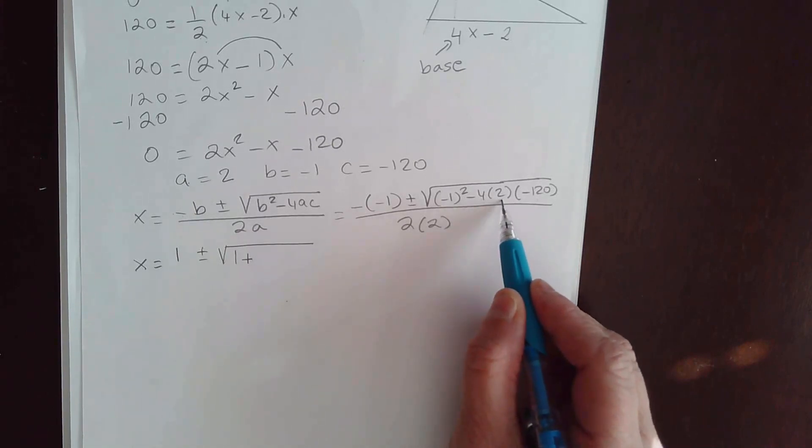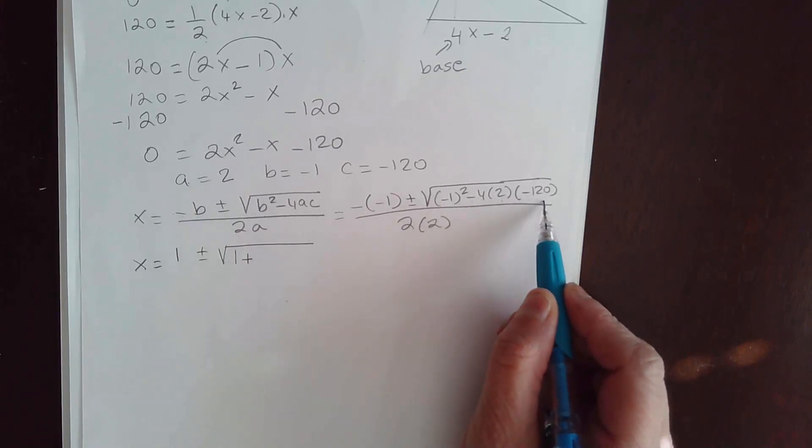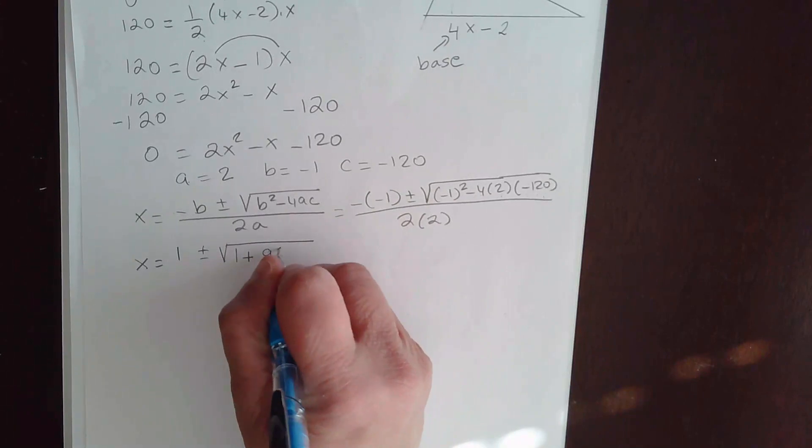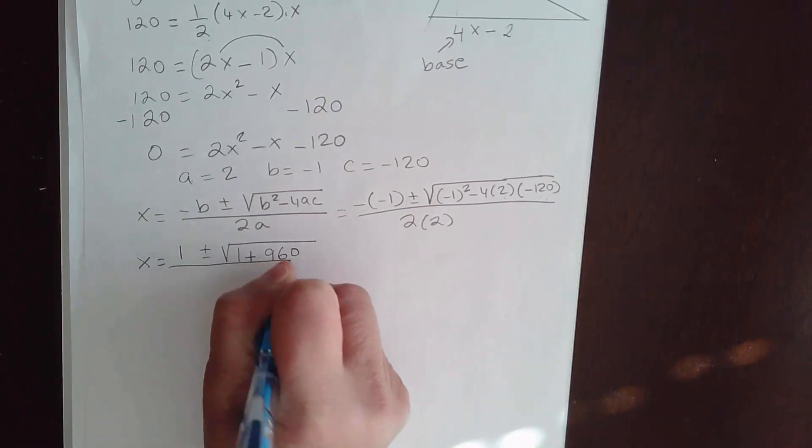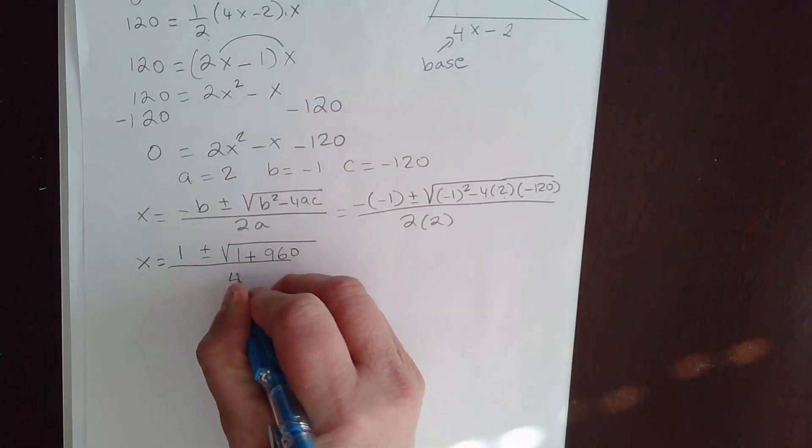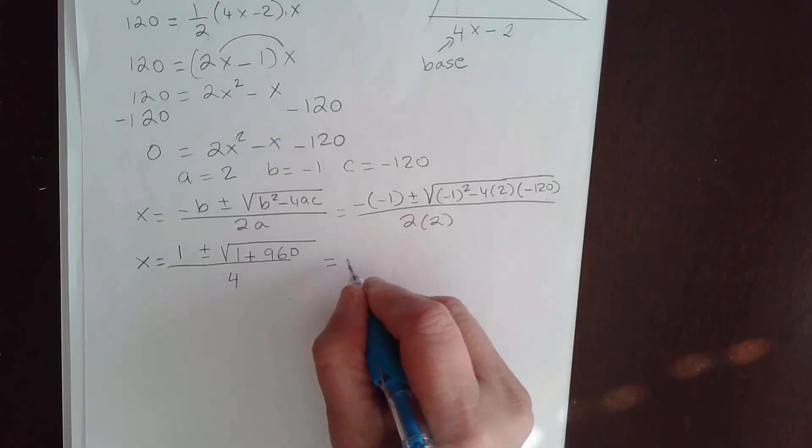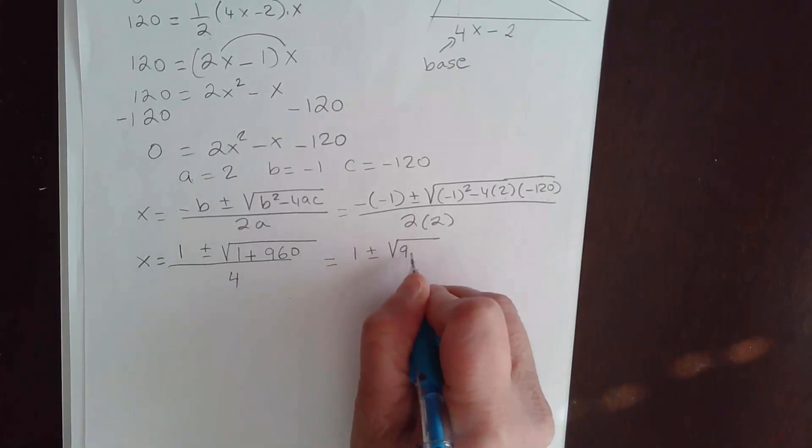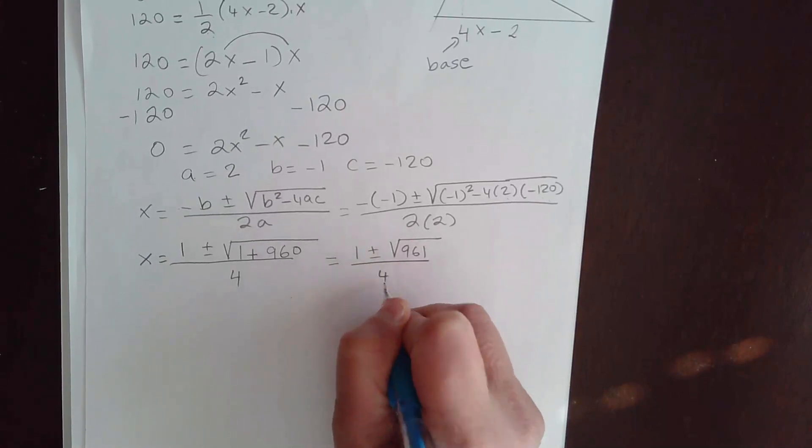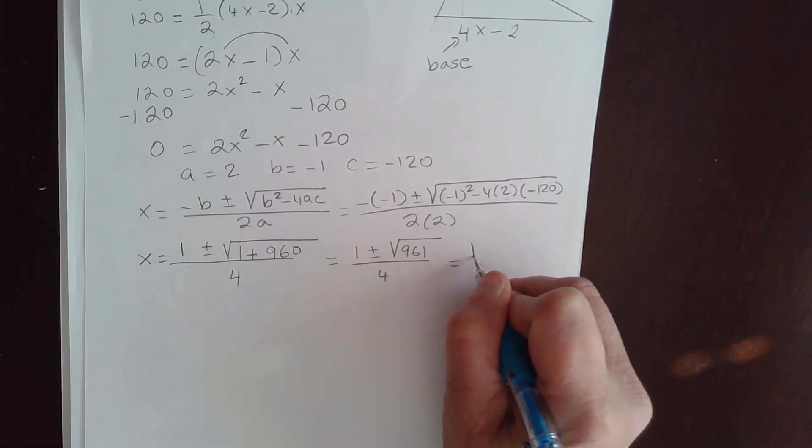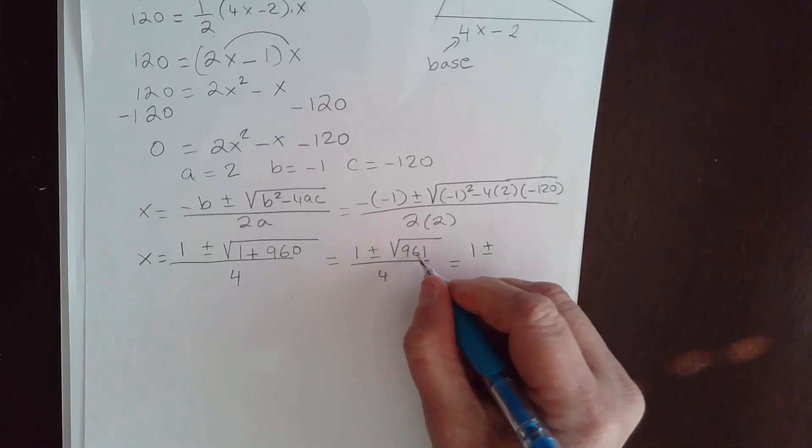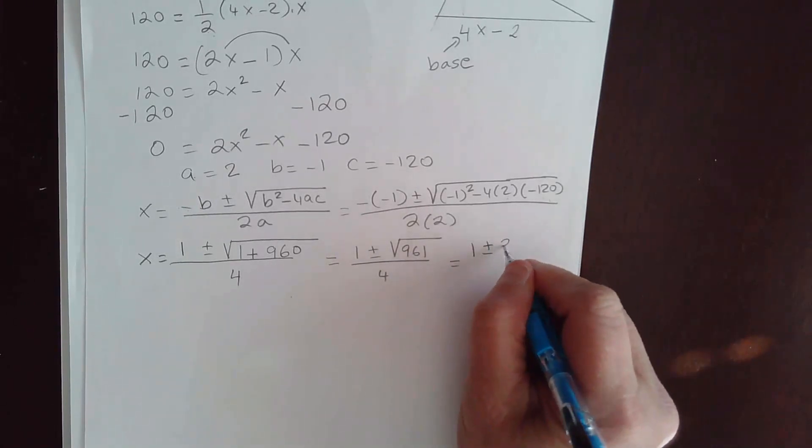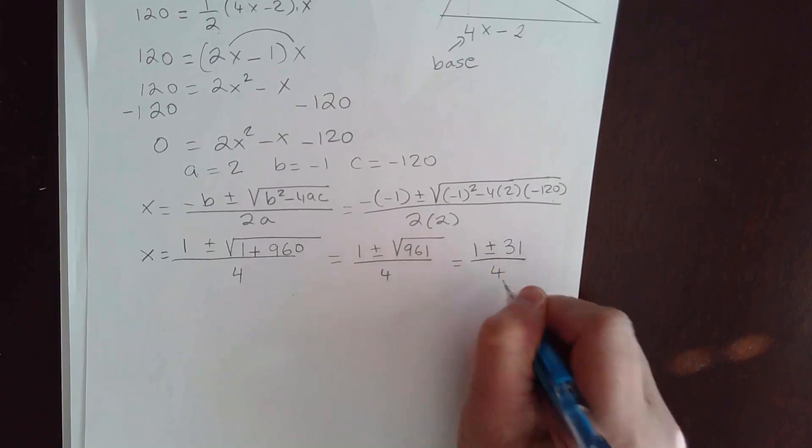Then you have 4 times 2 times 120. So go ahead and bring your calculator. 4 times 2 is 8. 8 times 120. That's going to give me 960. And you can check it with your calculator. 2 times 2 is 4. So that's going to be 1 plus or minus square root of 960 plus 1 is 961 over 4. You can use your calculator. The square root of 961 is 31 over 4.